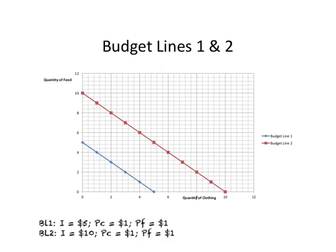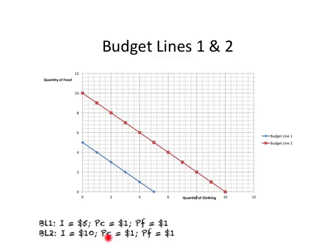On this diagram we have two budget lines. The blue one is our original Budget Line 1 (BL1), based on John's income being five dollars with both prices at one dollar. The red line is Budget Line 2 (BL2), based on the new consumption choices where John's nominal income is ten dollars and both prices remain at one dollar.